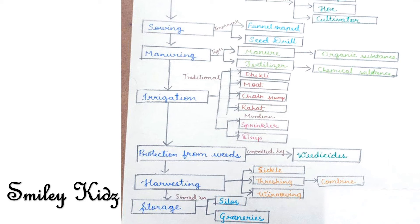The next agricultural practice is protection from weeds. What are weeds? Weeds are undesirable plants that grow along with the crop. The removal of weeds is called weeding. How can we control weeds? Weeds are controlled by using certain chemicals called weedicides.